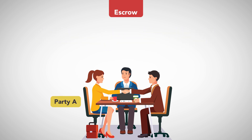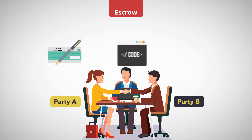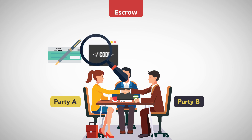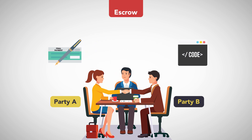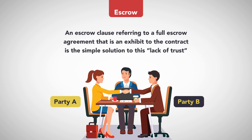For example, Party A has contracted with Party B to create proprietary software. Before Party A makes its final payment to Party B for the software, Party A wants the code and wants to make sure the software is appropriately executable. Party B, on the other hand, does not want to transfer the code and an executable version of the software to Party A without receiving its final payment. An escrow clause referring to a full escrow agreement that is an exhibit to the contract is the simple solution to this lack of trust.